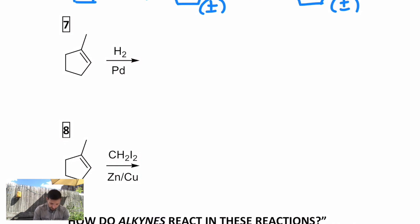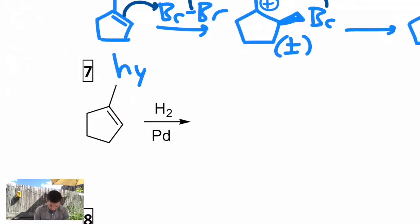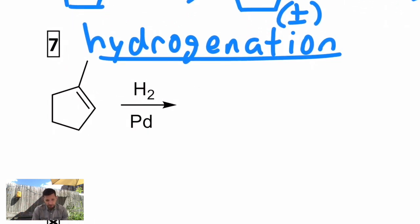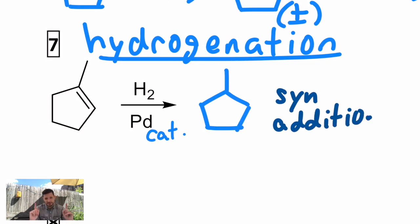The next one is called hydrogenation. This is very useful in the food industry for making hydrogenated fats and oils. Many naturally occurring fats and oils have long unsaturated carbon chains, and you can hydrogenate them to drastically change their properties. You take a pi bond, react it with H2 and a palladium catalyst, and you get an alkane. This occurs with syn-addition. The two hydrogens add to the same face of the alkene.